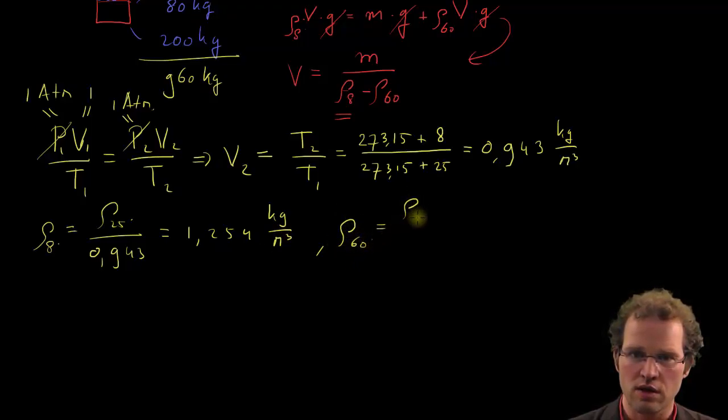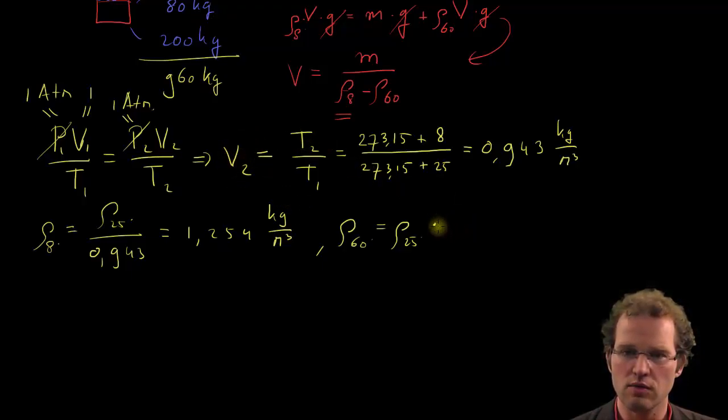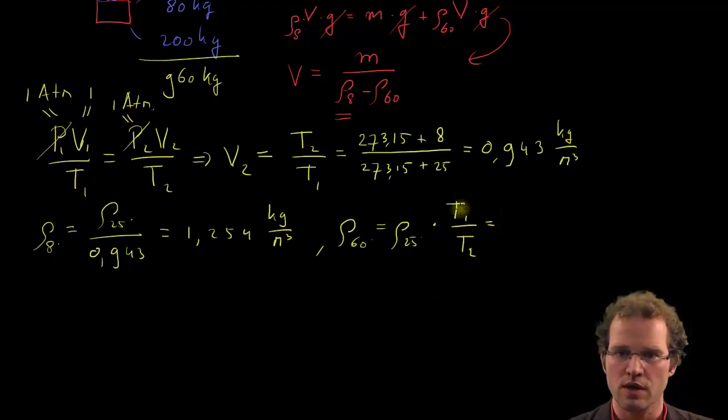We start with the, oh, let's do it a little bit different. I would start with 25, and I would take this into account. Instead of dividing by the vector V₂, I now multiply with T₁ divided by T₂. Because if you divide by a fraction, it's actually the same as multiplying with the inverse of this fraction.